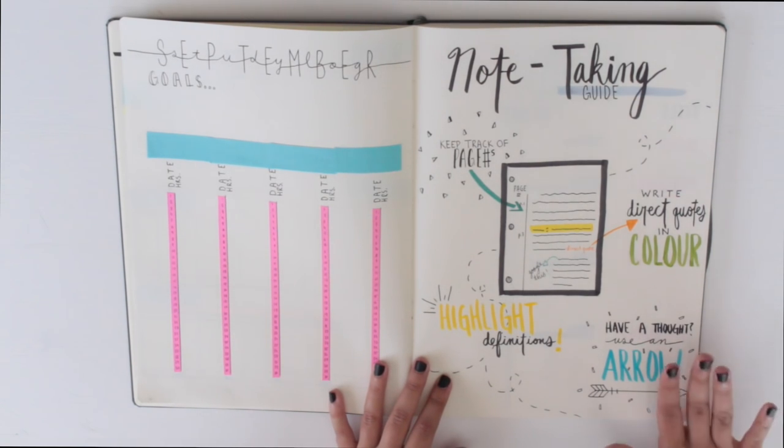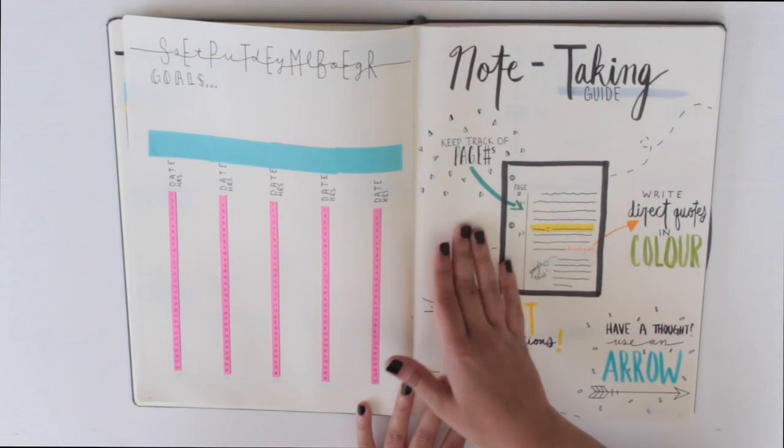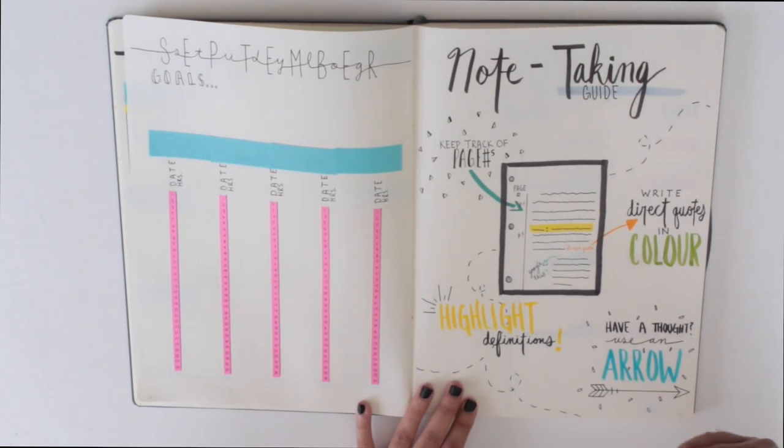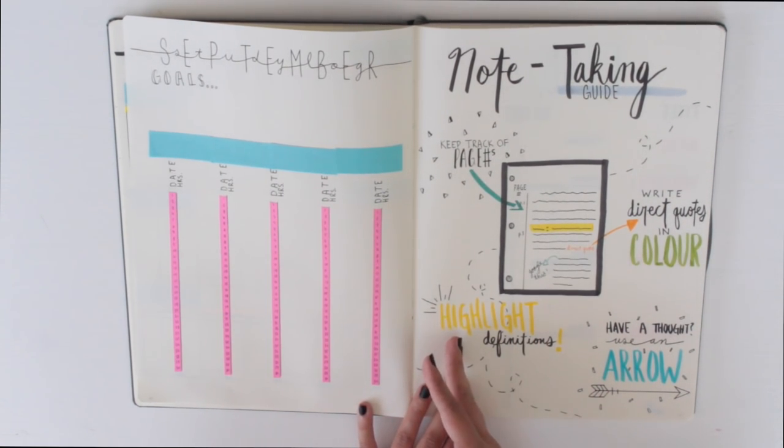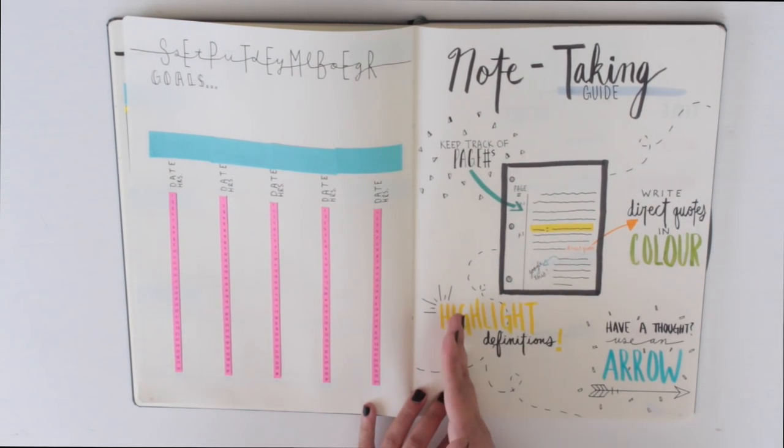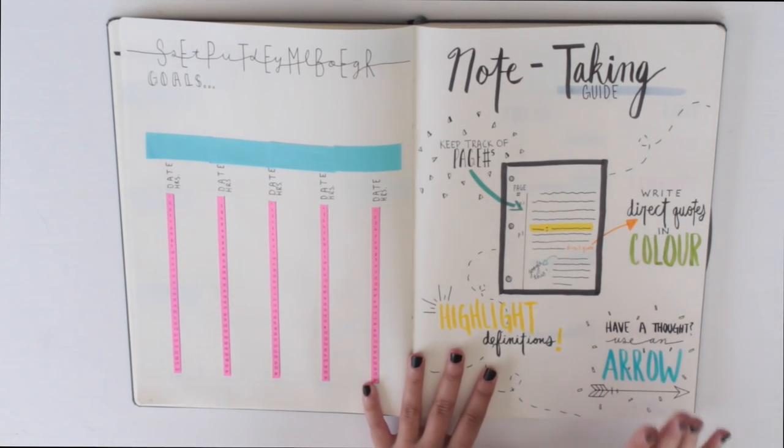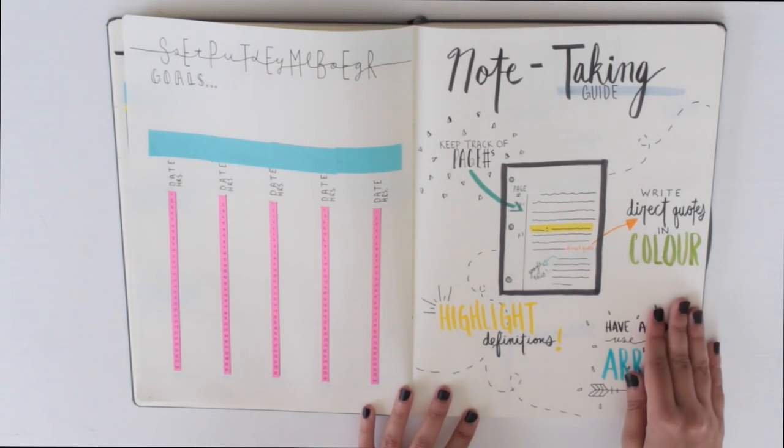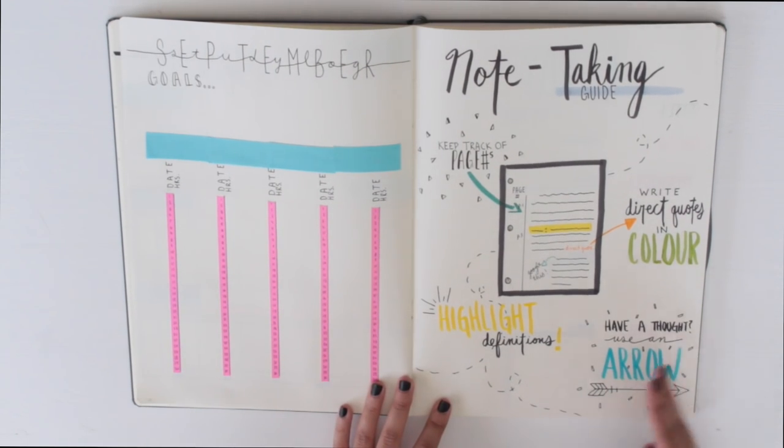These are tips I did in my first year of university that I thought were really effective. The first tip is to keep track of page numbers as you're writing notes from your textbooks or readings. Keep track of the page numbers to the left side of your page. I usually just keep it to the left of the red margin. I can't tell you how helpful that is when you need clarification on a note and you can quickly directly go to the source. Write direct quotes in color, highlight definitions, this is a huge one. And if you have a thought, use an arrow.